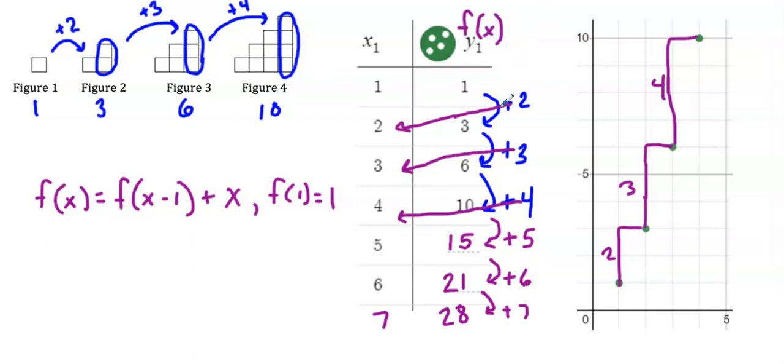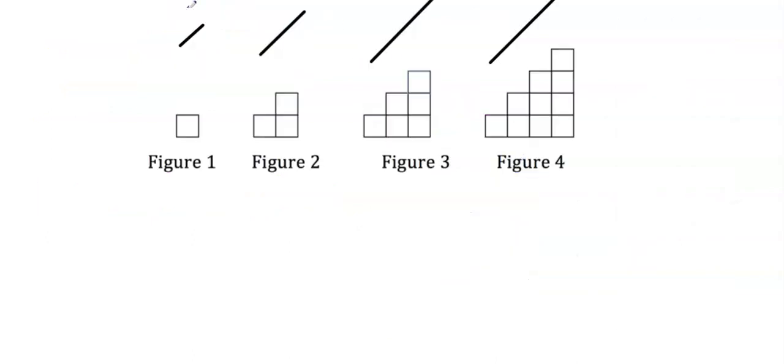I have my recursive rule, but I also want to create an explicit rule. With my explicit equation, I'm wanting to relate the figure number to the number of blocks, or the area of the shape. Since I'm talking about the number of blocks in the figure, that is an area.